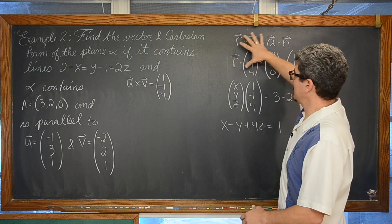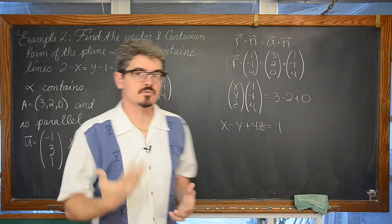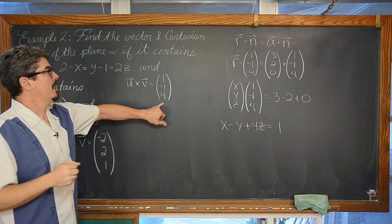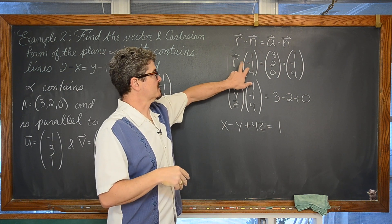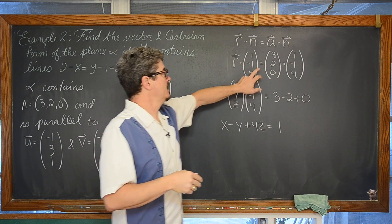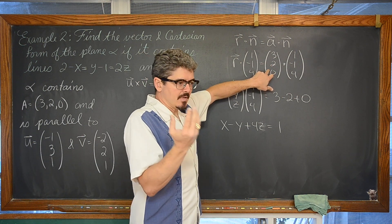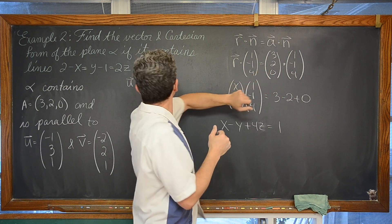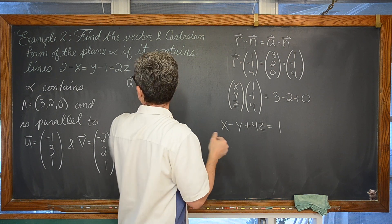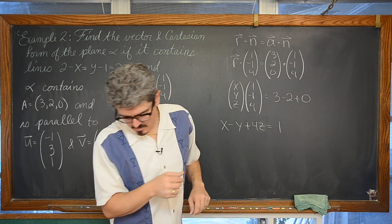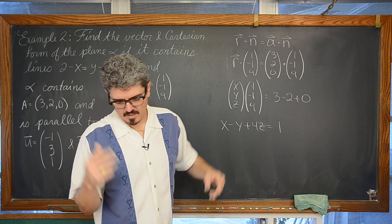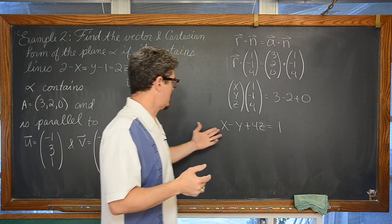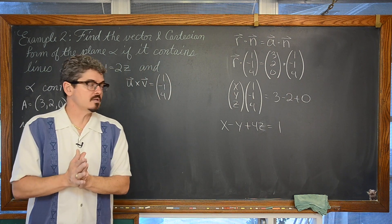It is a fair amount of work. Setting up the 3×3 matrix, going through the process of finding its determinant, and breaking it down into those three 2×2 matrices gives us the cross product. Then we say that vector r dotted with normal vector n is equal to the position vector for some known coordinate on the plane. We used point (3, 2, 0), took the dot product with vector n, and got x minus y plus 4z equals 1.